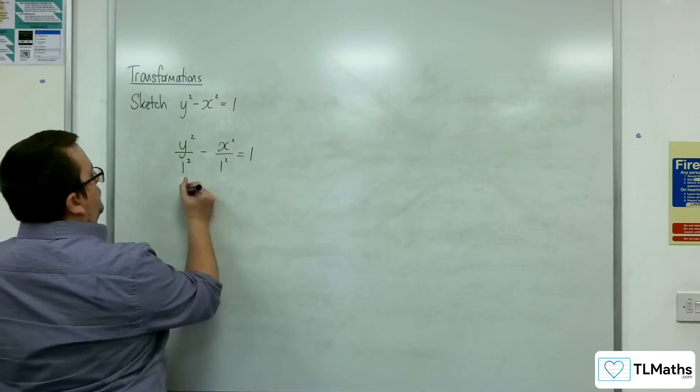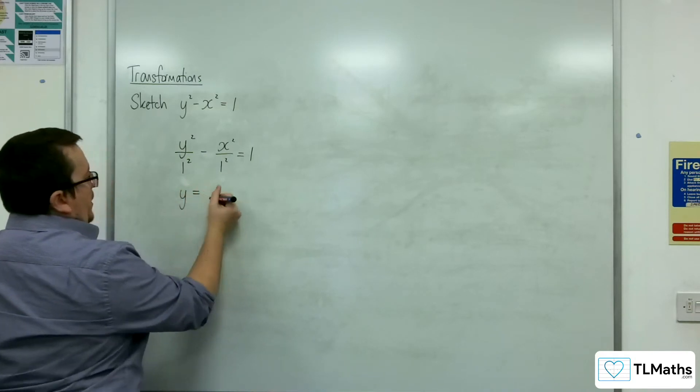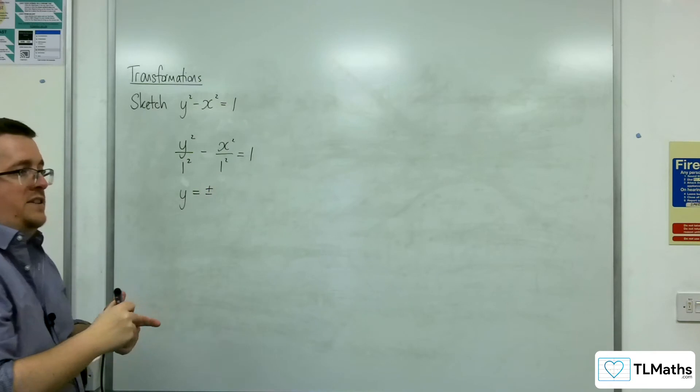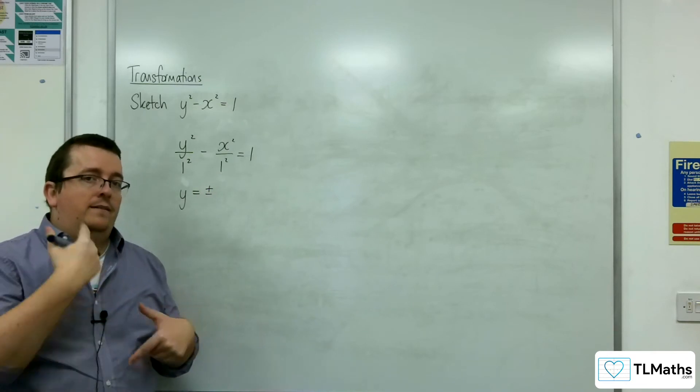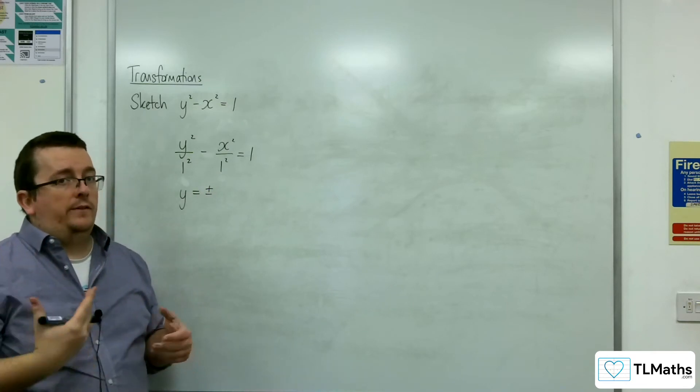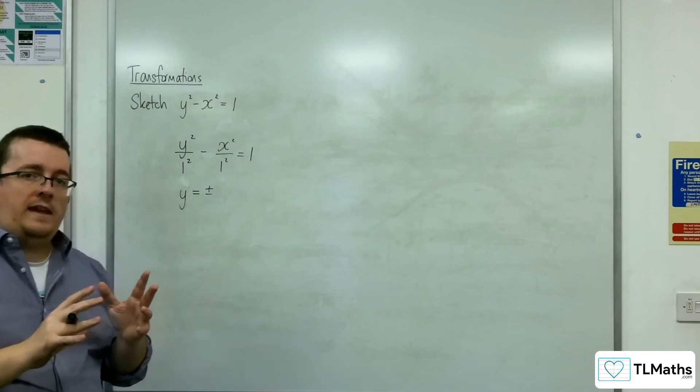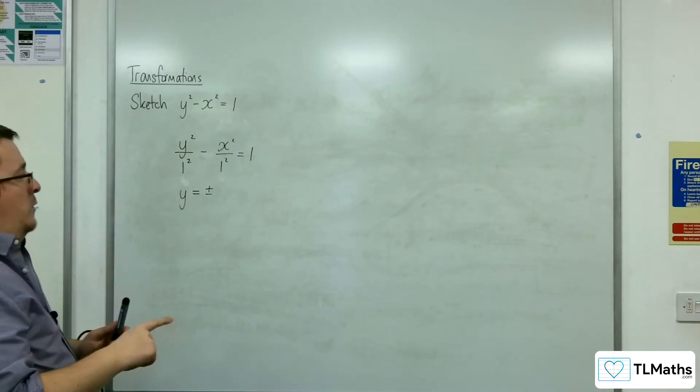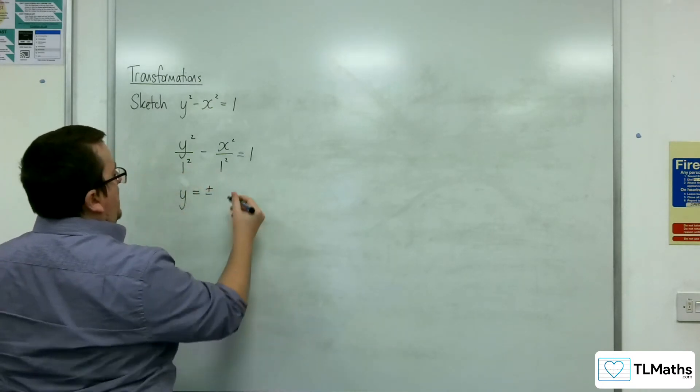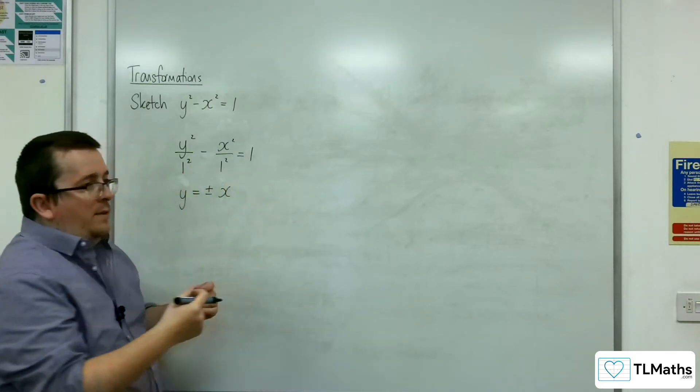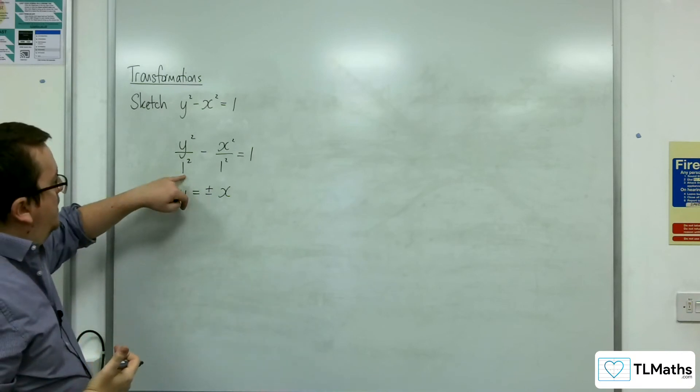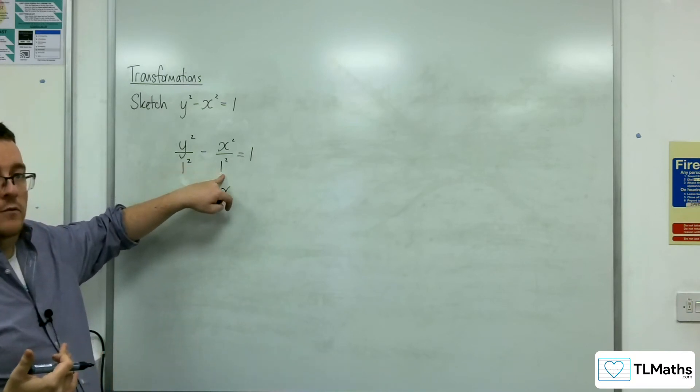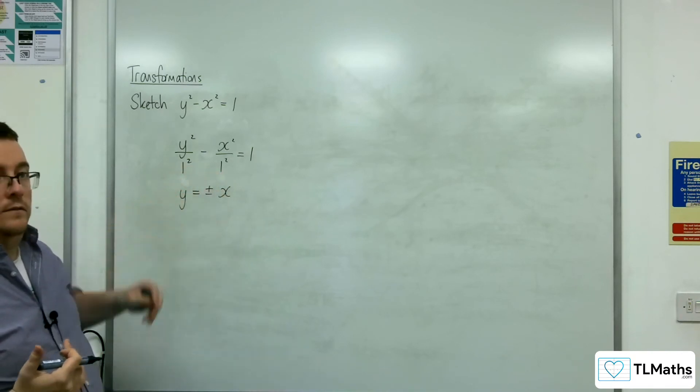So, now, the asymptotes are, instead of being b over a times x, they're a over b times x, because of the reflection in the y equals x line. So, a over b, 1 over 1. I mean, it's still just plus or minus x, right? But I'm just getting the point that it's going to be the a divided by the b value, rather than the b divided by the a value.